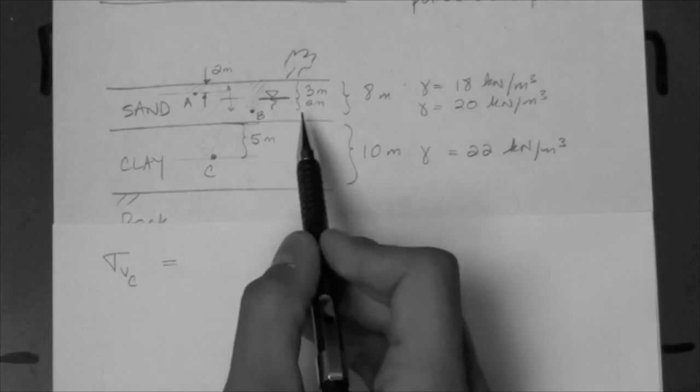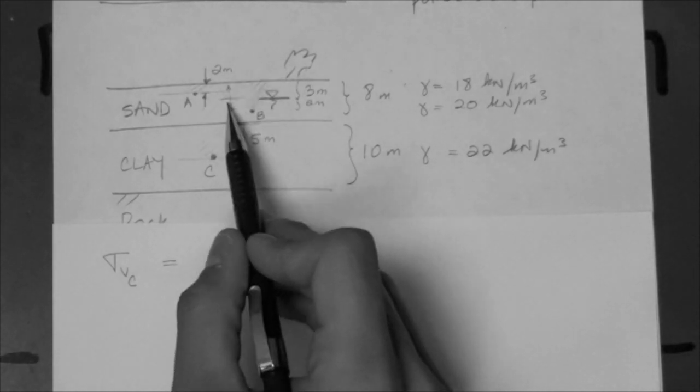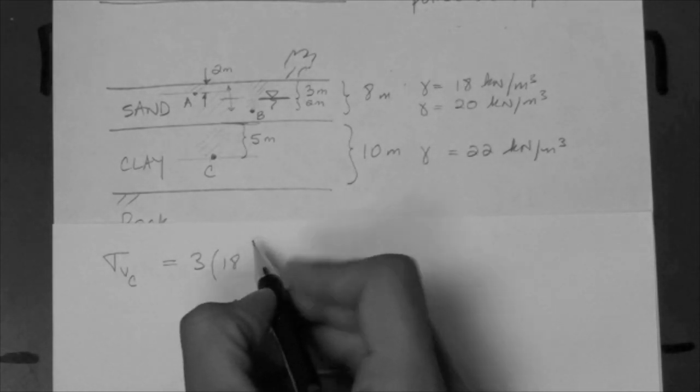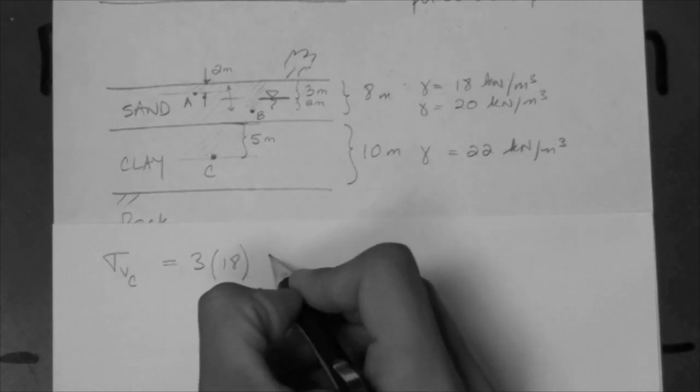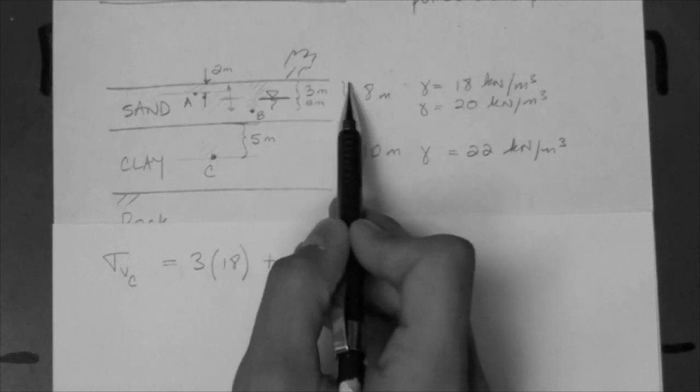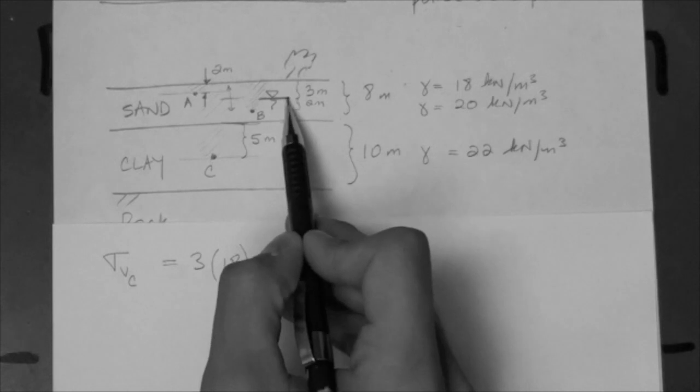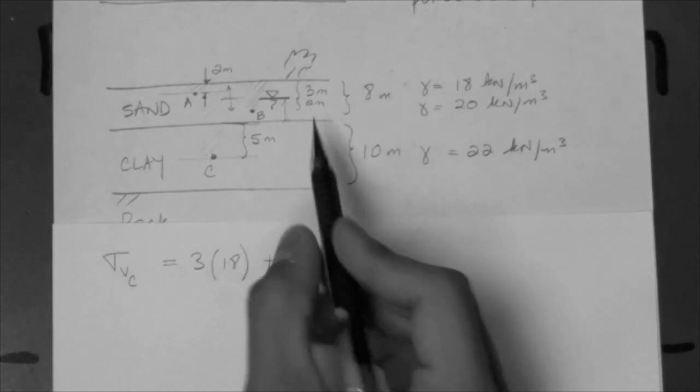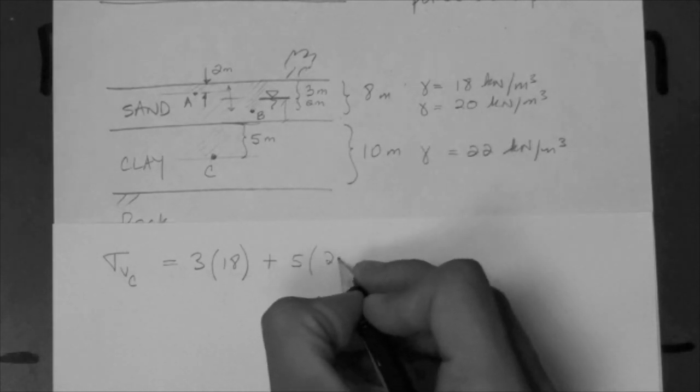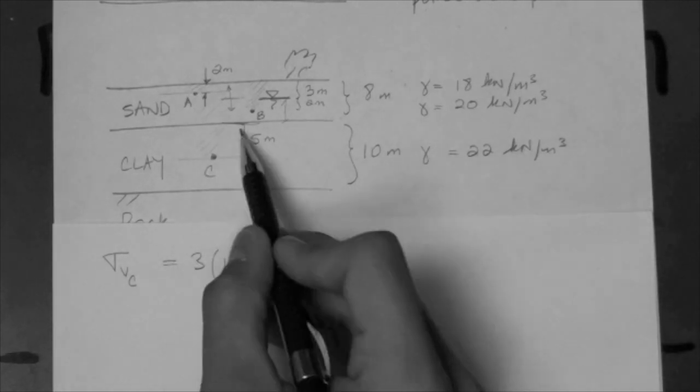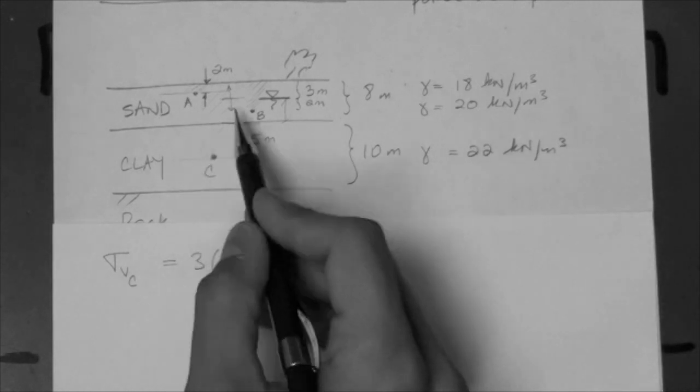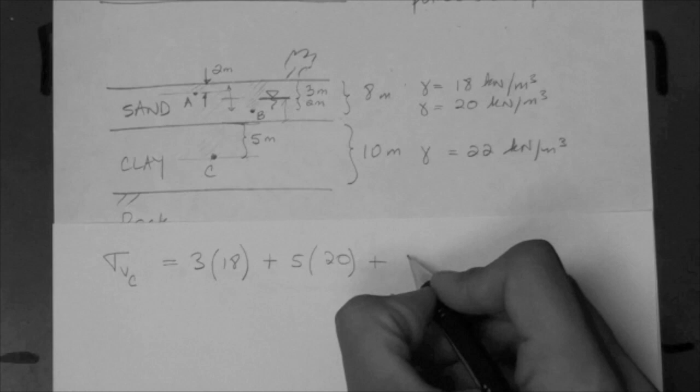First we begin with the dry sand: three meters of sand with gamma equal to 18. If this is three meters and this is eight, then from here to here there's five. So we have five meters of saturated sand, and we have five meters of saturated clay. This place is below the water table, so it's saturated.